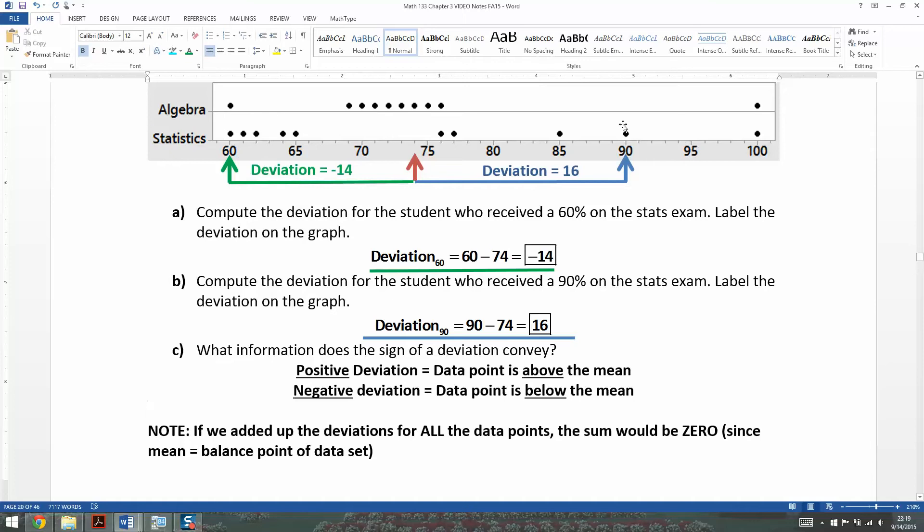What would happen is the negative ones over here, that's all the ones on the left, and the positive ones over here, that's all the ones on the right, would balance each other out, because the mean is the balance point. Since the mean is that balance point, that means that your deviations above and below are always going to add up to zero, always.